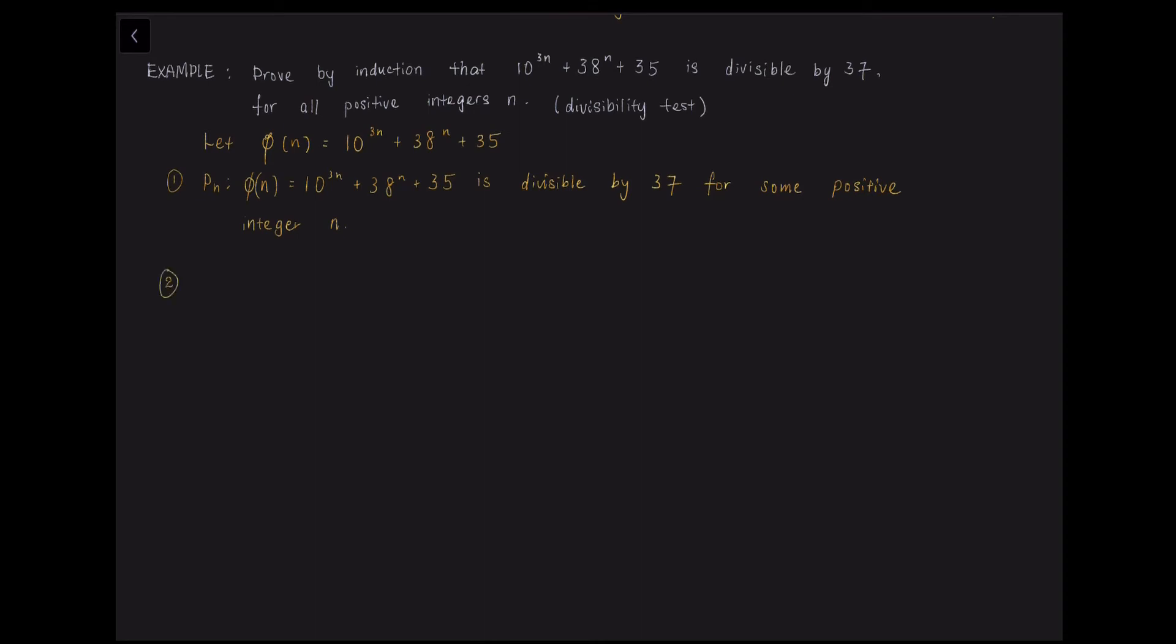Then the second step is to let N equals to 1. So φ(1) equals to 10 to the power of 3 plus 38 plus 35, which is equals to 1073. And 1073 is a multiple of 37. So it's the 29 times 37. So we can say that P(1) is true.